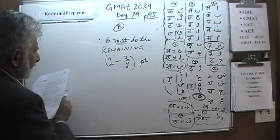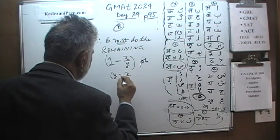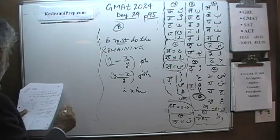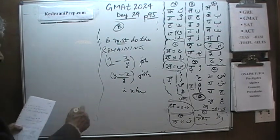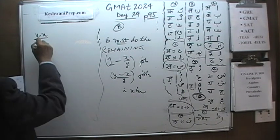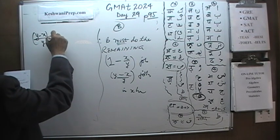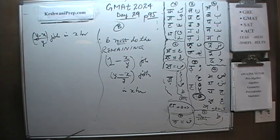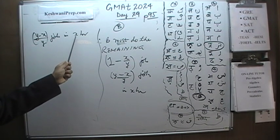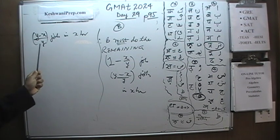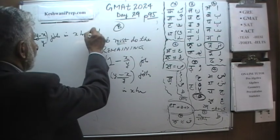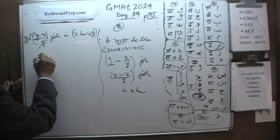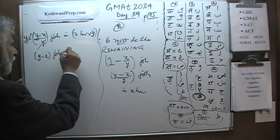Let's rewrite that as: B does Y minus X over Y of the job in X hours. Now, instead of giving him X hours, if you give him Y times the hours — multiply both sides by Y — the Y drops out, and we find that B can do Y minus X jobs in X times Y hours.